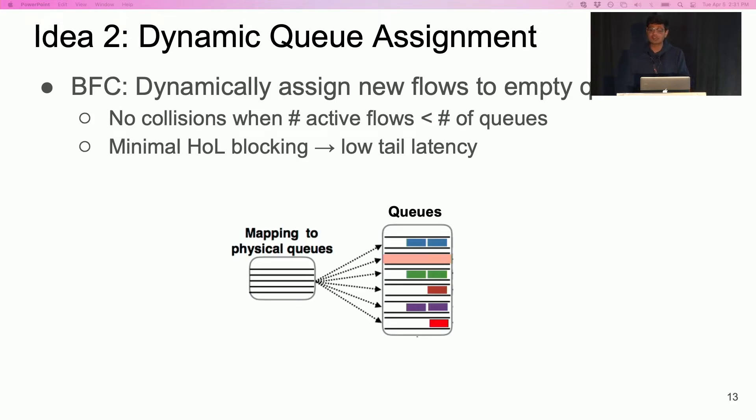What this means is that as long as the number of active flows at an egress port is less than the number of physical queues, no two flows share a queue, and there is no head of line blocking. Note that in certain scenarios like massive incast, the number of active flows at a port can exceed the number of queues.